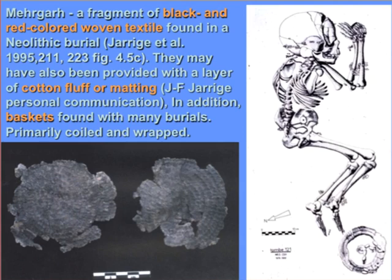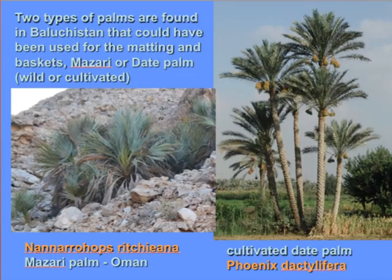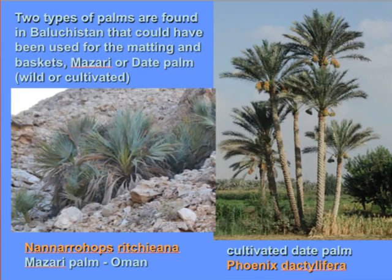Cotton fluff or matting may have been used in burials at Mehrgarh. Professor Jarish told me that in many burials they found evidence of a layer underneath the individual, suggesting a blanket or bedding was placed in the grave. Many types of baskets were found, mainly coiled and wrapped, probably made from grasses as well as different types of palms. There are two types of palms found in Baluchistan: the mazari palm and the date palm. Palms growing at 7000 BC might have been wild dates, but both wild dates and mazari palm would have been available.